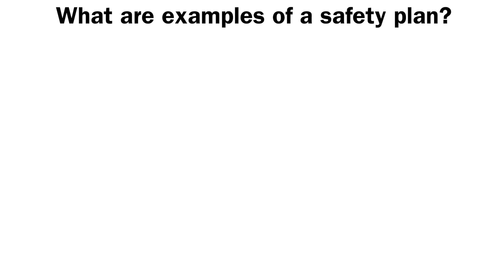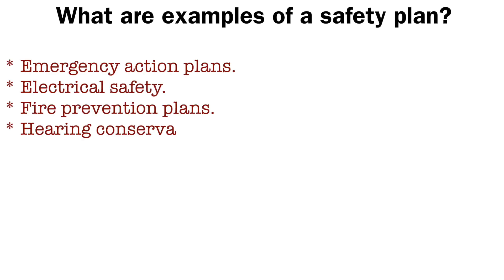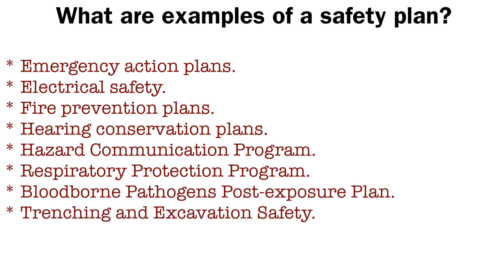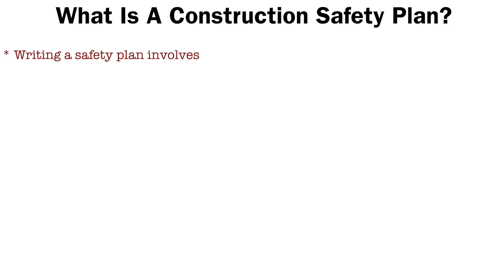Here are just a few examples of safety regulation and required plans: emergency action plan, electrical safety plan, fire prevention plan, hearing conservation plan, hazard communication program, respiratory protection program, blood-borne pathogen post-exposure plan, and trenching and excavation program.